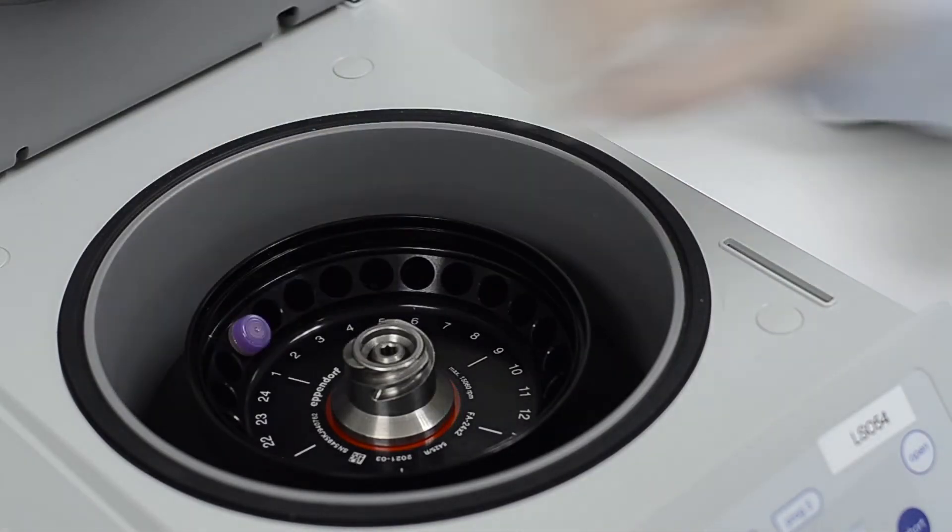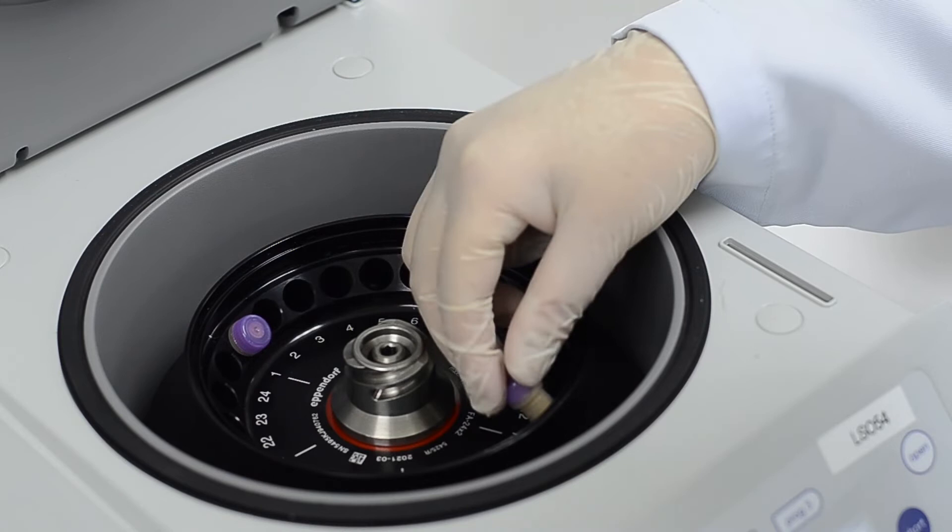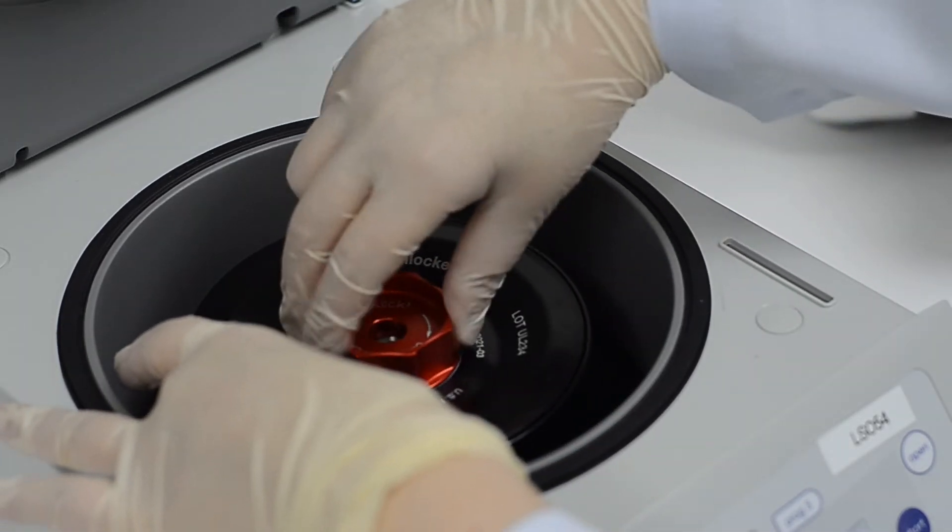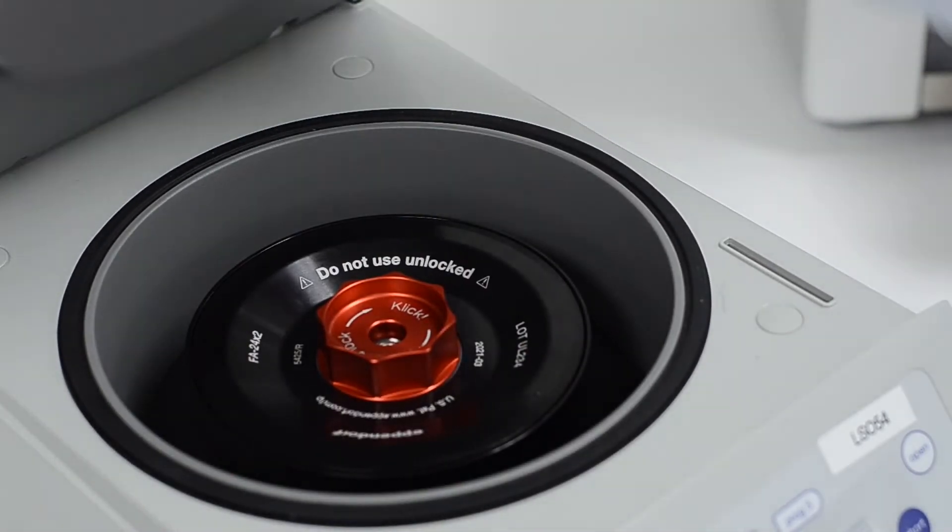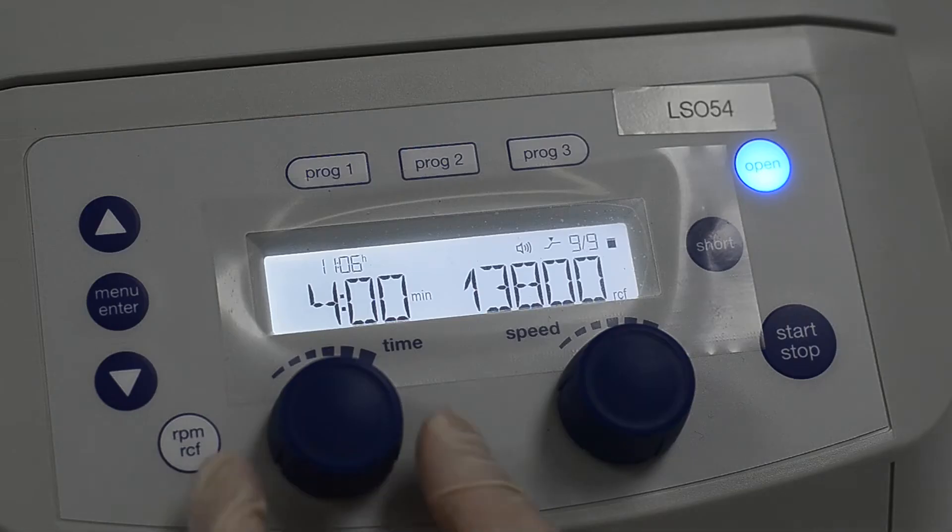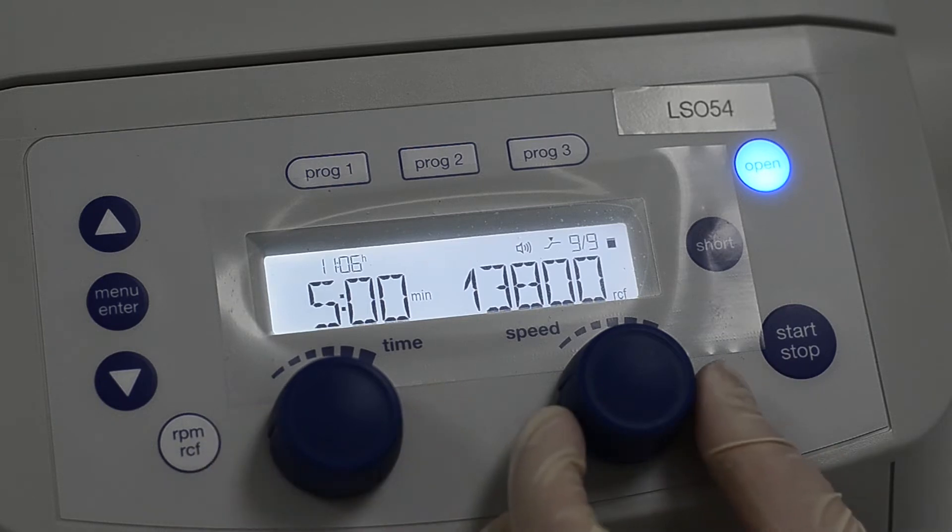Transfer the tube to a centrifuge machine. Centrifuge the mixture at 14,000 G for 5 minutes to spin down the debris.